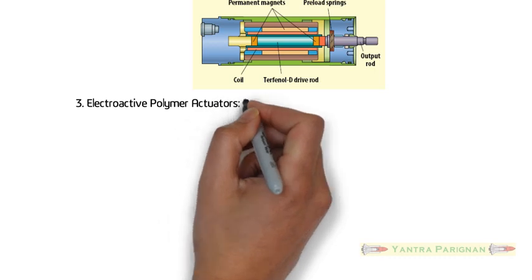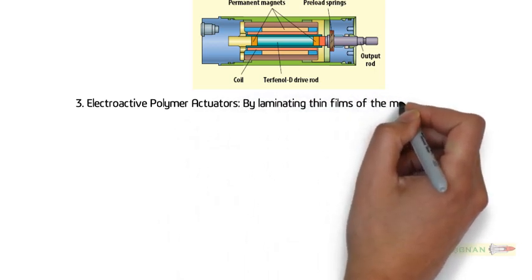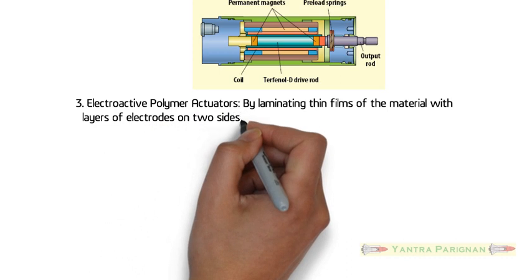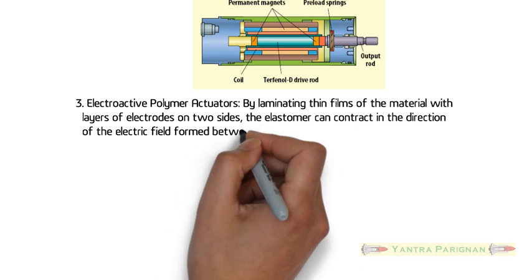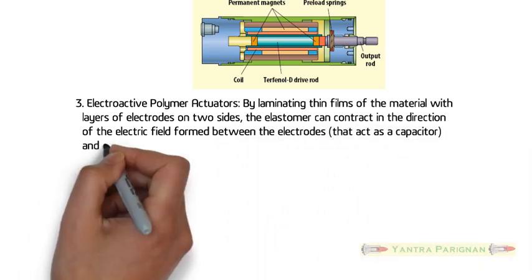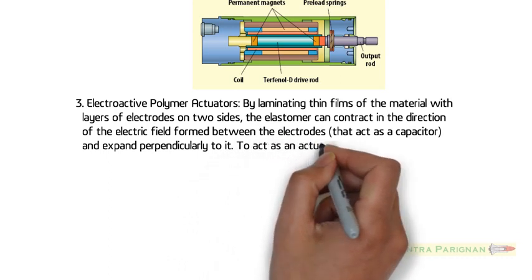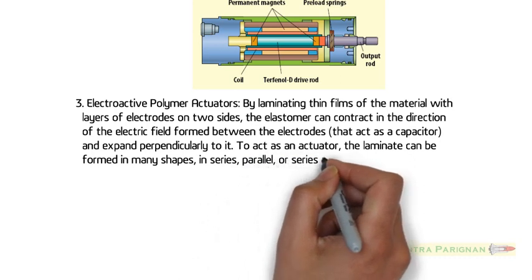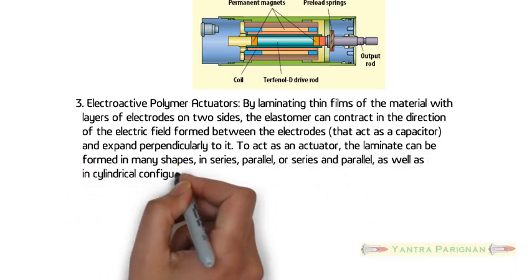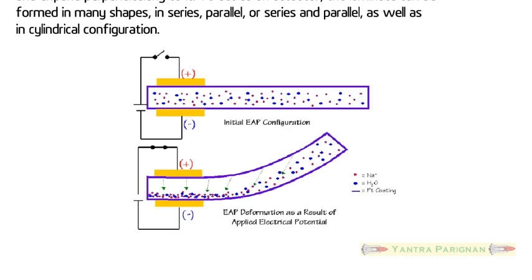Electroactive Polymer Actuators. By laminating thin films of the material with layers of electrodes on two sides, the elastomer can contract in the direction of the electric field formed between the electrodes that act as a capacitor, and expand perpendicularly to it. To act as an actuator, the laminate can be formed in many shapes: in series, parallel, or series and parallel, as well as in cylindrical configuration. Figure shows the initial and final configurations of electroactive polymer actuators. Here the electroactive polymer deforms upon the application of the electrical potential.